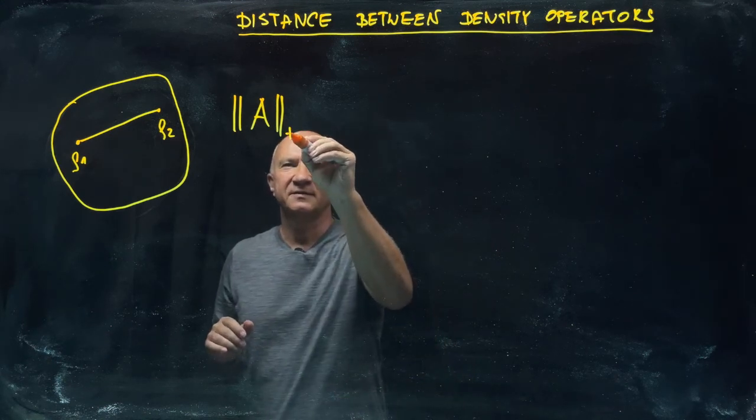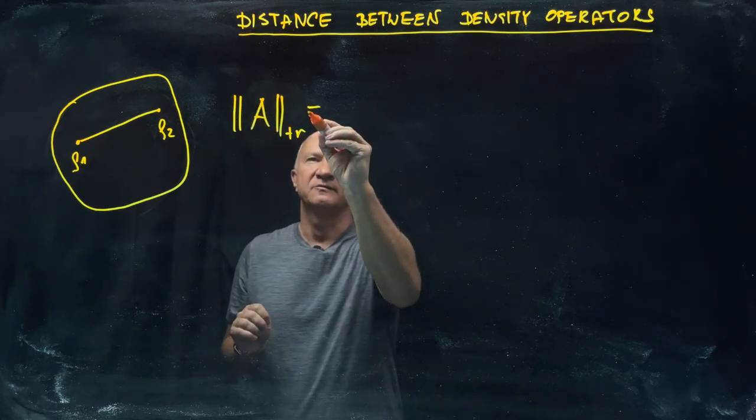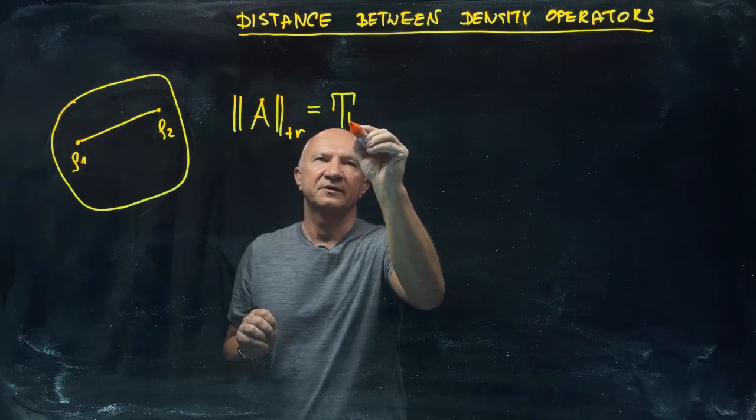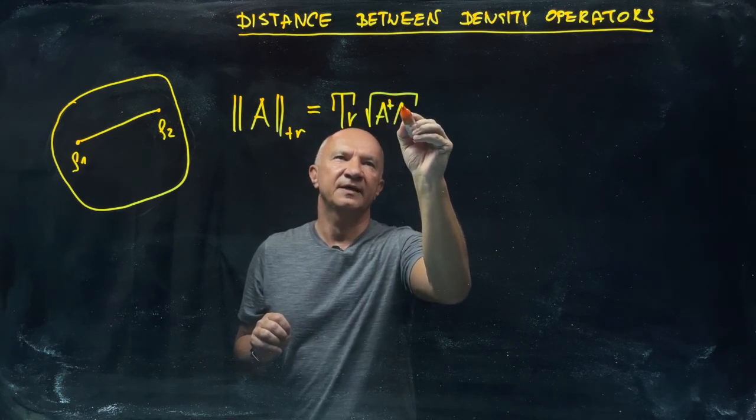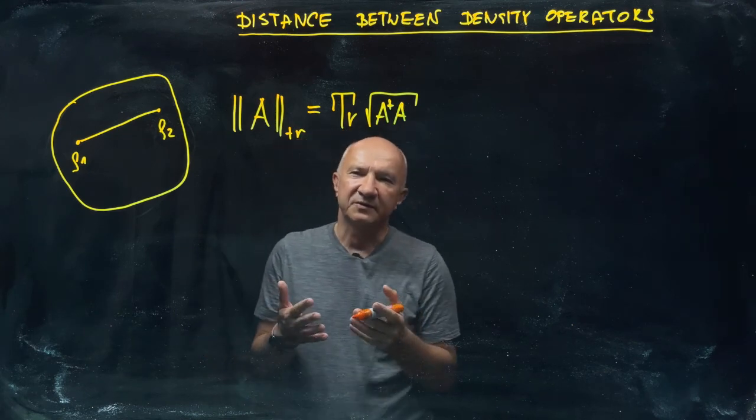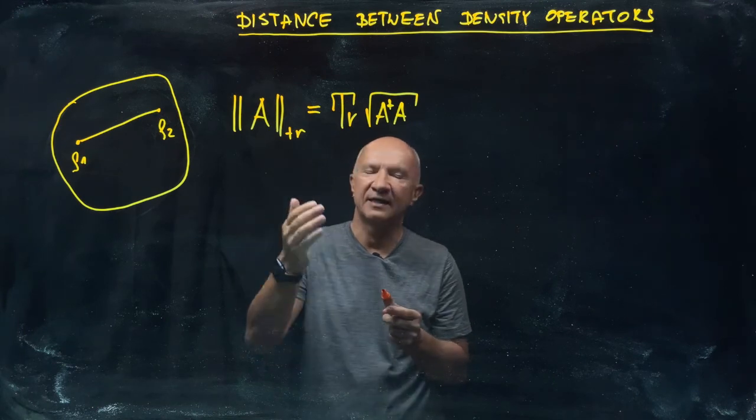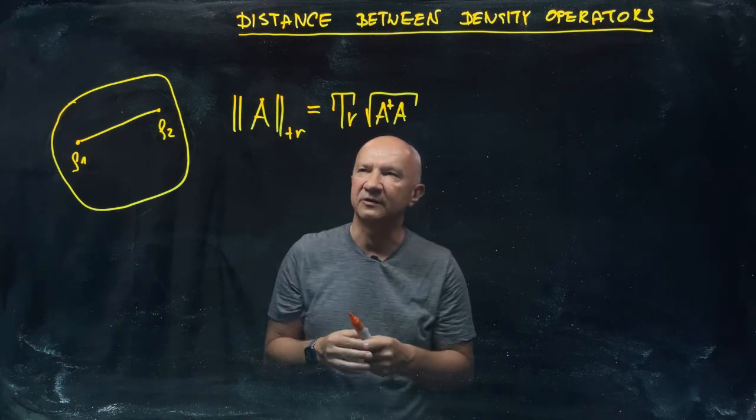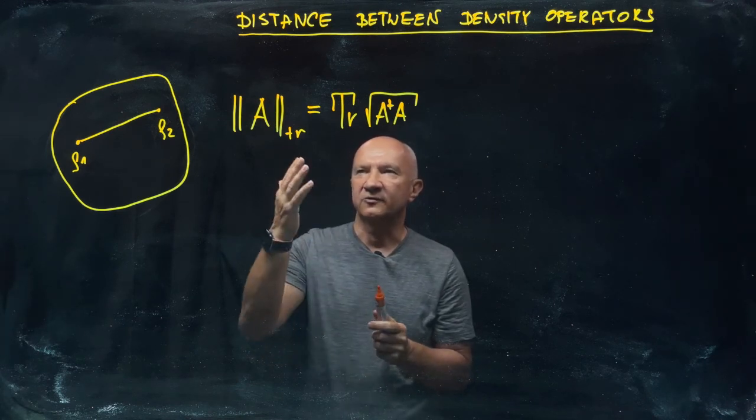The trace norm of operator A is defined as trace of the square root of A†A. What it really means is that you take the sum of singular values of this operator, or you look at the eigenvalues, take the mod of each eigenvalue, and add them together. That's your trace norm.